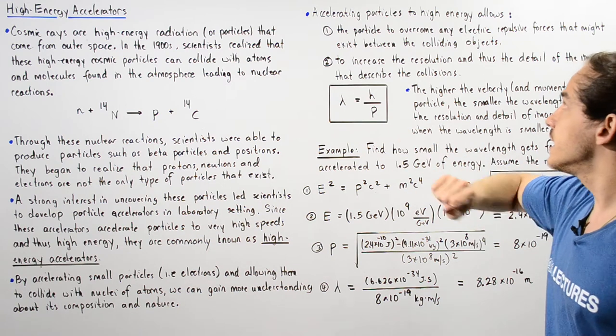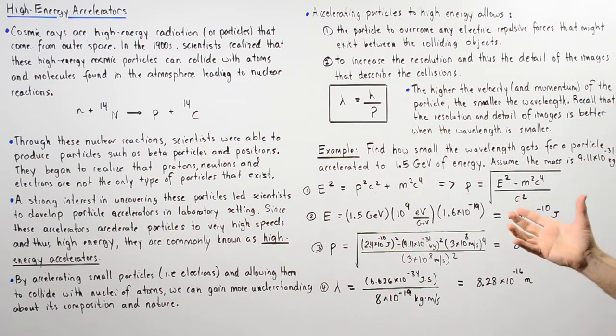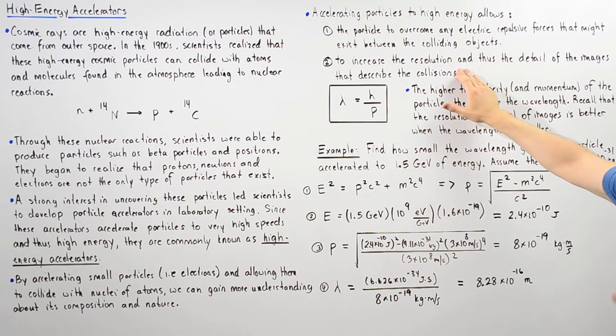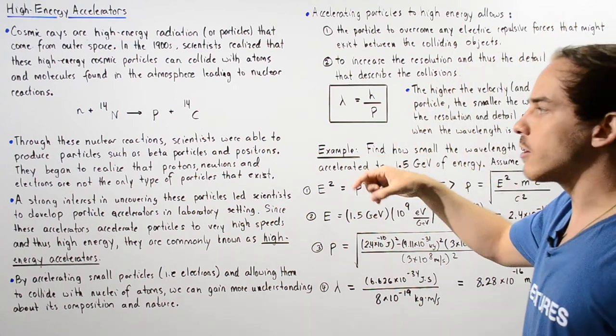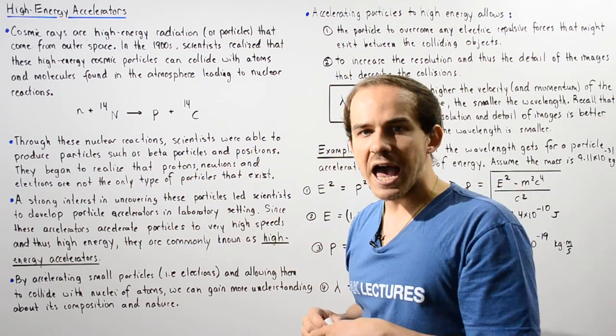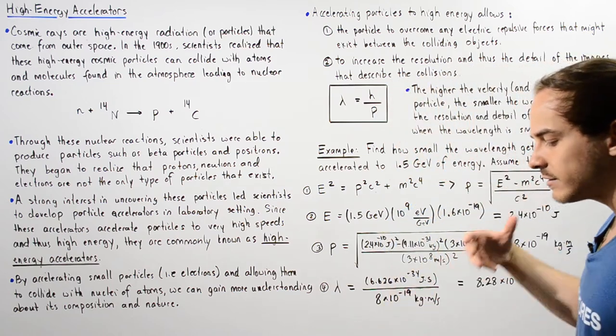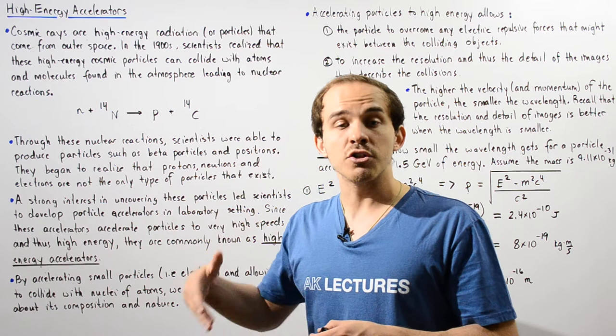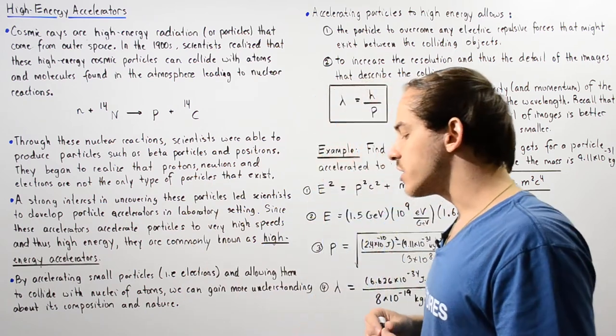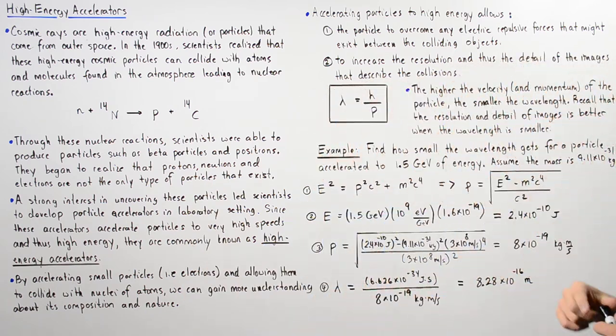The second thing that accelerating particles to high energy allows us to do is to increase the resolution and therefore the detail of the images that are produced during that collision. How exactly does increasing the energy of our particle or the momentum of that particle allow us to increase the resolution?